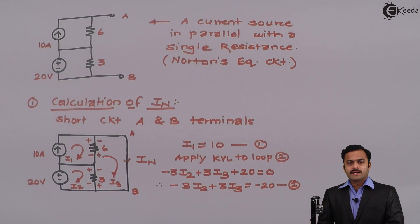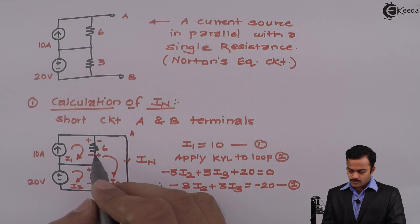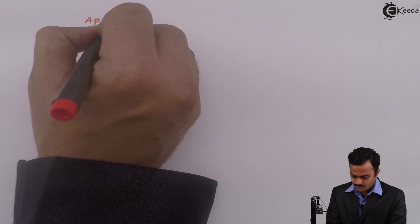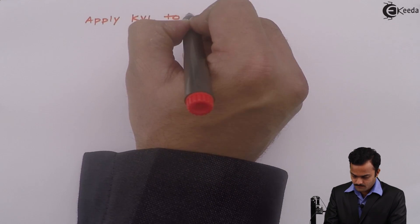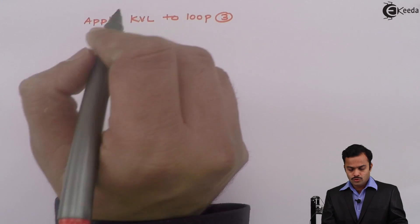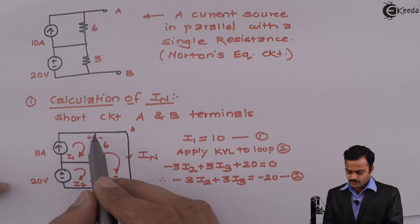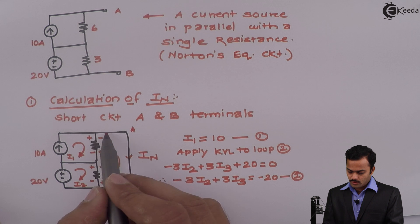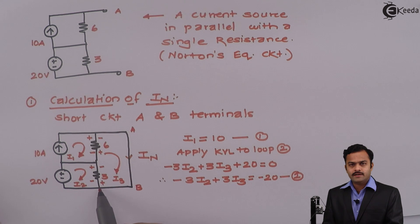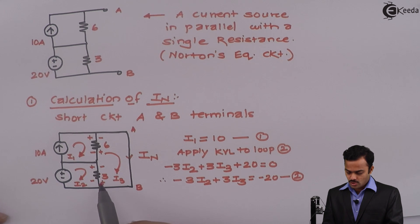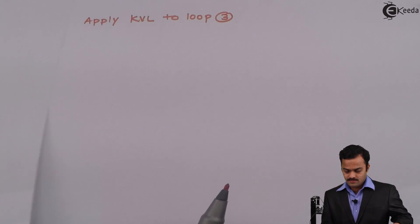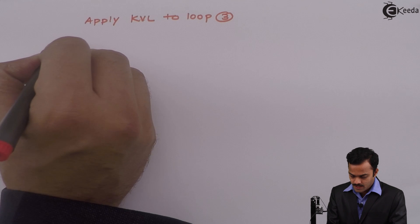Similarly I can apply KVL to loop 3. So loop 3, I can start from this point. Luckily we are not having any element till this point and directly I am having this 3 ohm resistance.